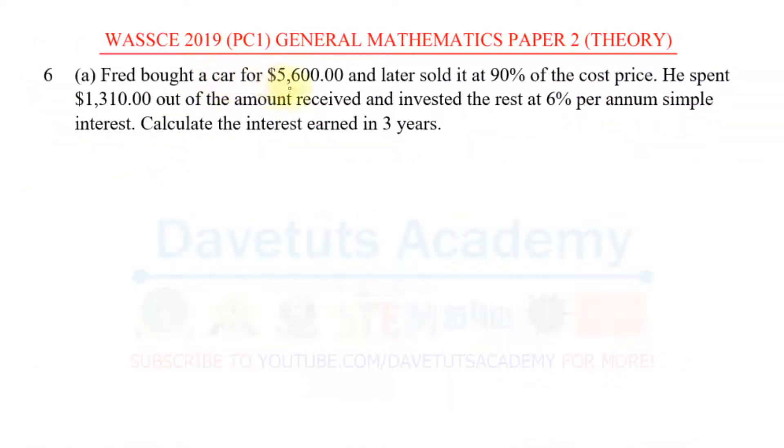Fred bought a car for $5,600 and later sold it at 90% of the cost price. He spent $1,310 out of the amount he received and invested the rest at 6% per annum simple interest. We have to calculate the interest earned in three years.